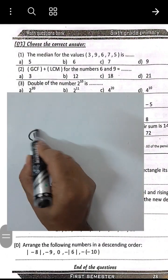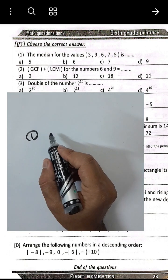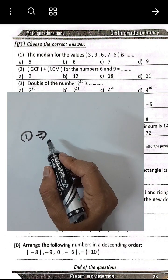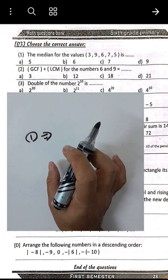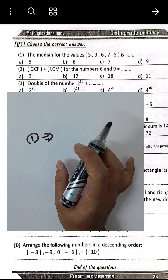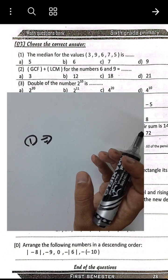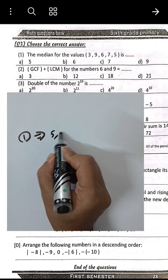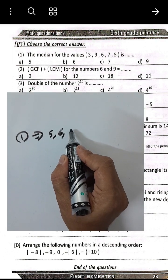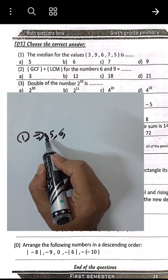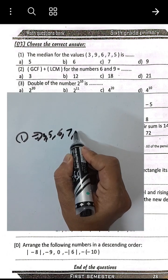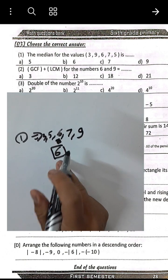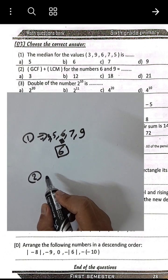Choose the correct answer. Number 1: Find the median by arranging the values in ascending order, then choose the middle number — the median is the middle value in a set of data. We have 3, 5, 6, 7, and 9. The median is 6.